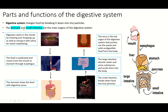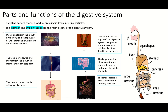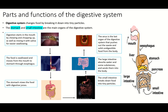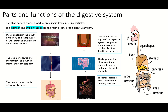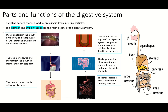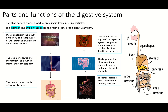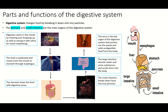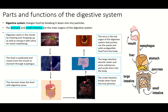We need the digestive system to change the foods into something our body can get benefit from. Our body cannot get benefit from a piece of pizza directly — you cannot give a piece of pizza to your arms, legs, bones, heart, or any other part. This food must be changed into tiny particles, then the tiny particles will go through your body and your body will benefit and grow.